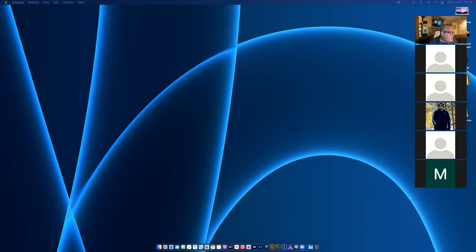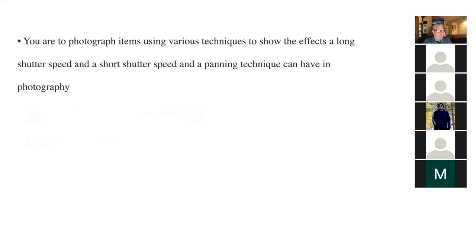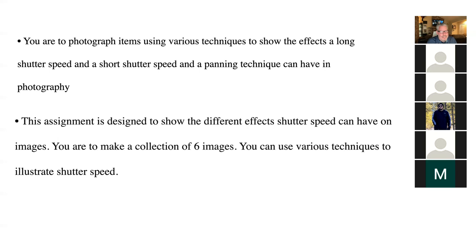Now let's get to the real meat and get to the assignment. I'm going to leave time at the end to go over questions. This video will be available on our class website and my YouTube channel, along with the PowerPoint. If you have questions, please let me know. This assignment is designed to show different effects shutter speed can have on images. You're going to make a collection of six images using various techniques to illustrate shutter speed.